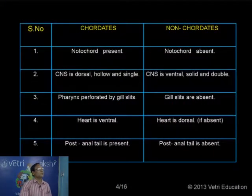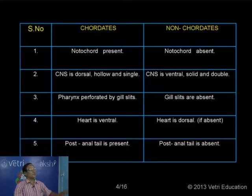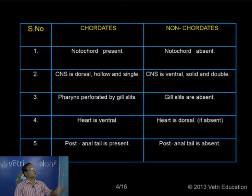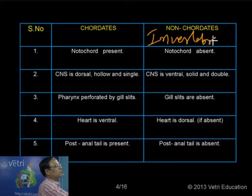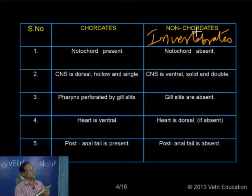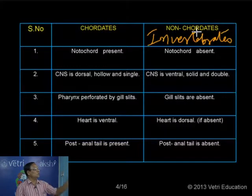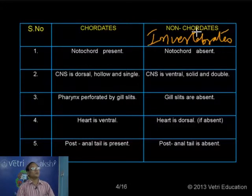Here is a comparison between chordates and non-chordates. In chordates, the notochord is present; there is no notochord in non-chordates. The central nervous system in our body is the spinal cord plus the brain, simply called the neural tube or nerve tube. During embryonic condition it is formed as a neural tube, which later differentiates into the brain and spinal cord. It is normally dorsal in position, hollow or tubular, and only one.